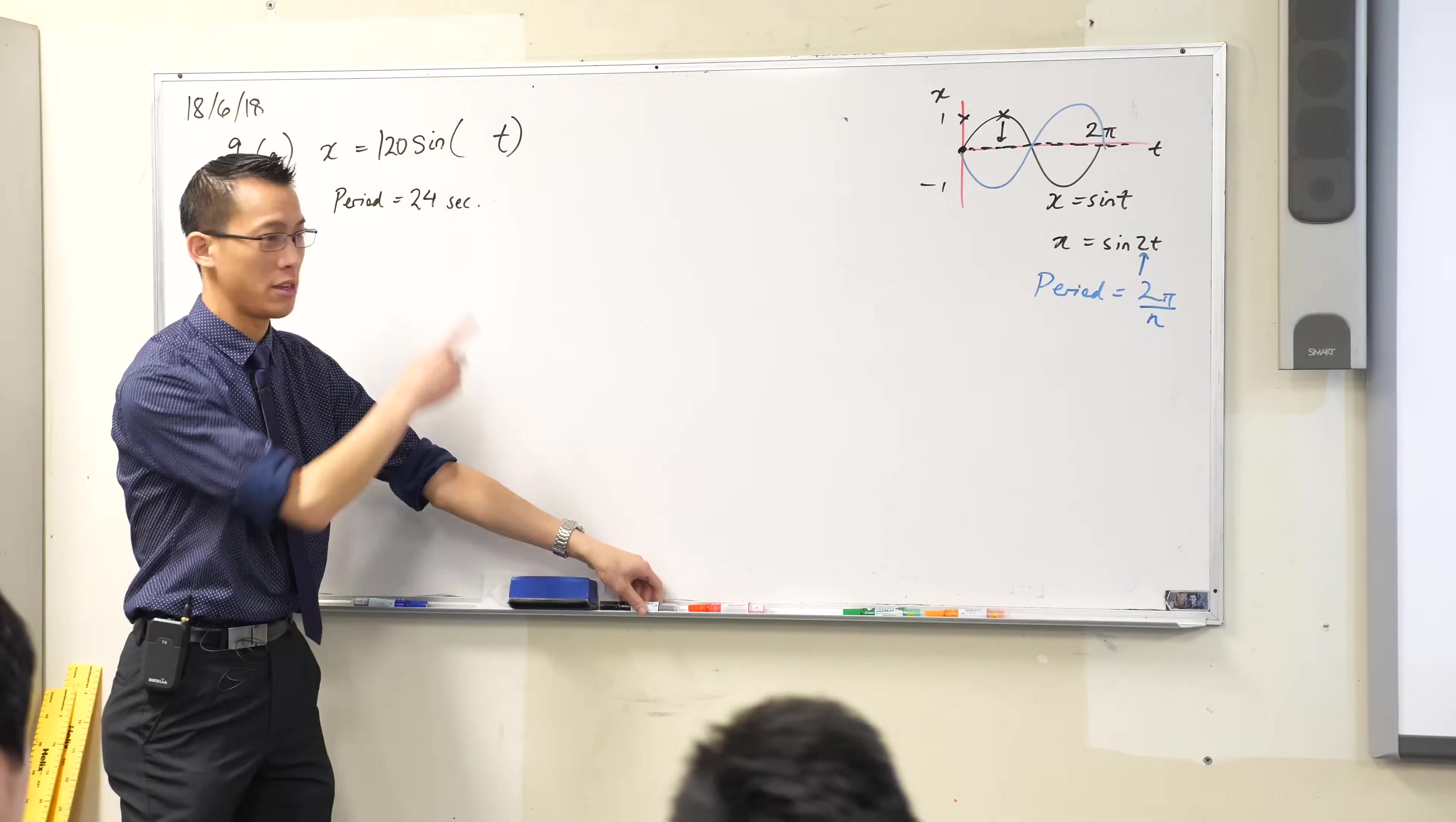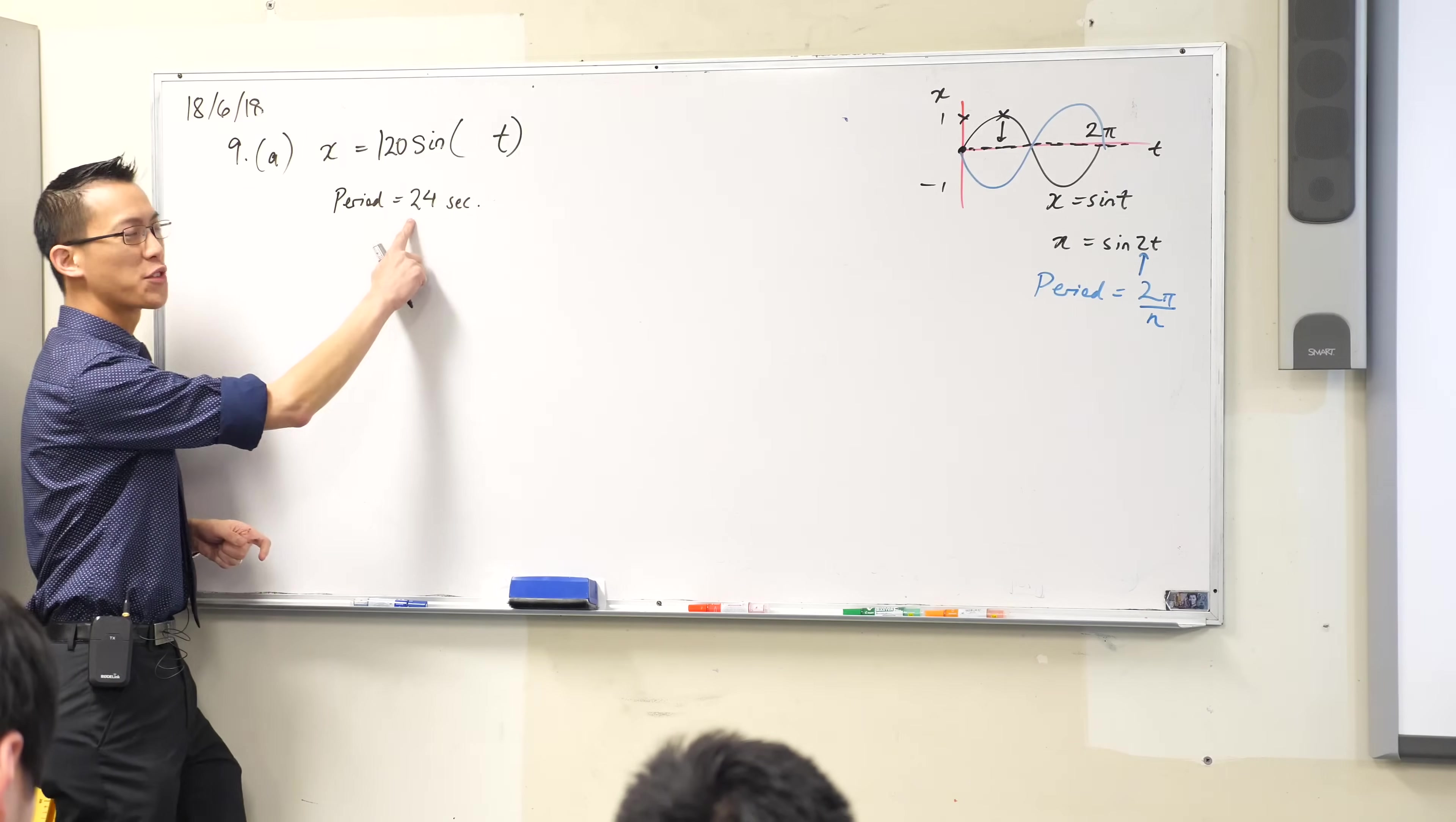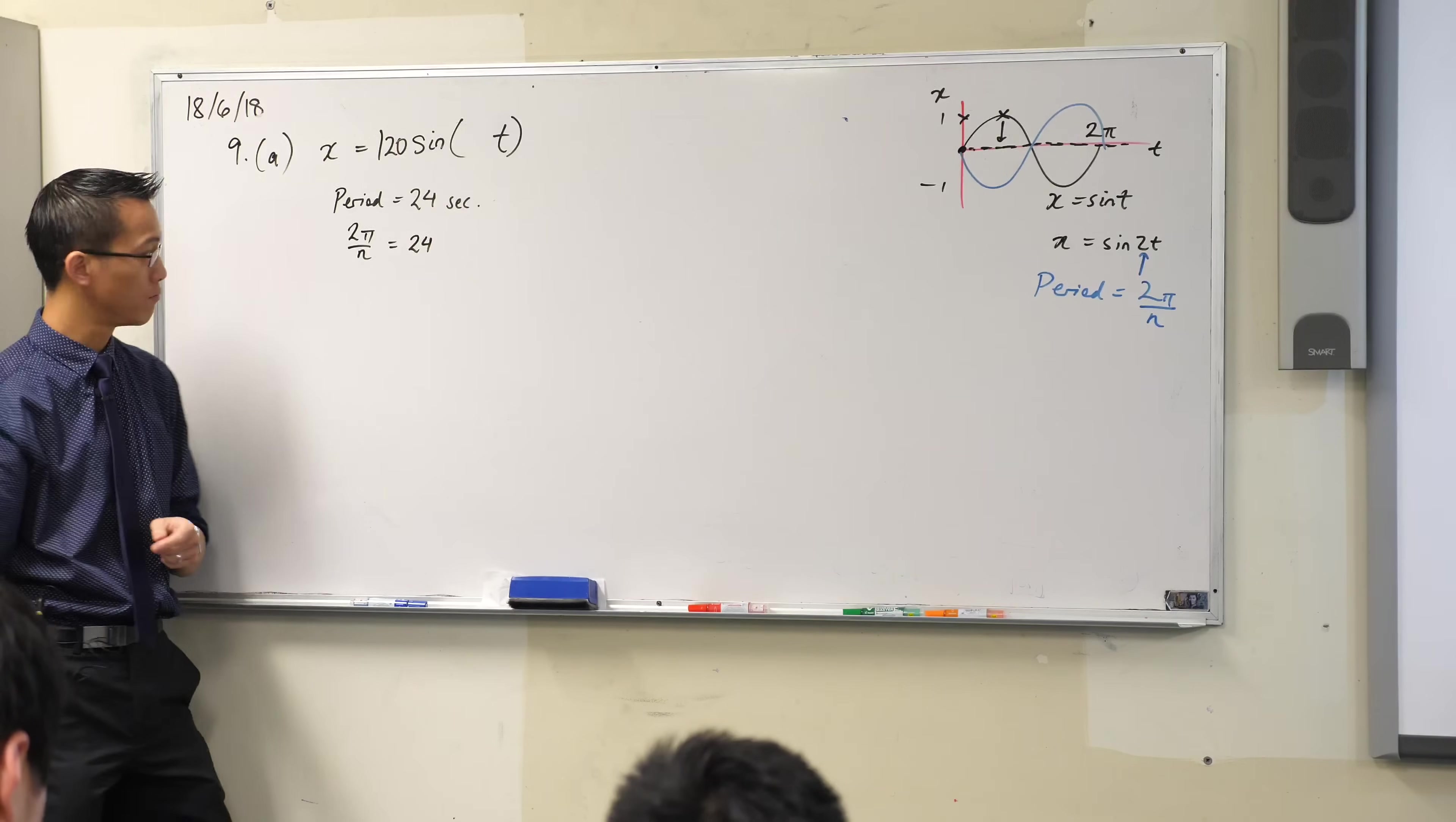So 2π on n. It is worth having that as a fact that you can recall about these graphs because you don't really want to fuss around getting this information, you just want to have it quickly. So if 24 is that period, right, I can say 2π on n equals 24.